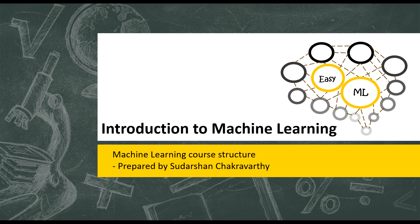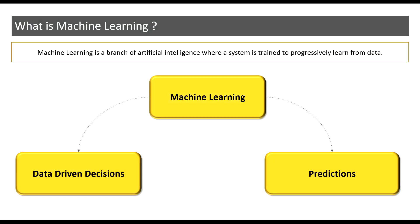But before delving into all that, let us take a quick look at what machine learning is. By definition, machine learning is a branch of artificial intelligence where a system is trained to progressively learn from data. I guess this definition may seem a little cryptic, but by the end of this course, you will be both familiar and comfortable with the concepts and application of machine learning.